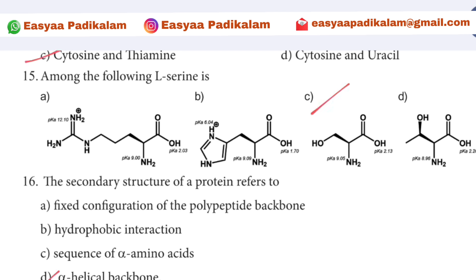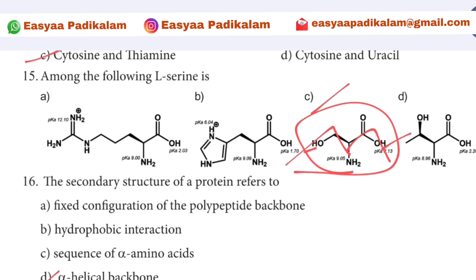15th question: Among the following, we will connect with this option — this side is OH and this side is OH. So we will choose both OH groups.